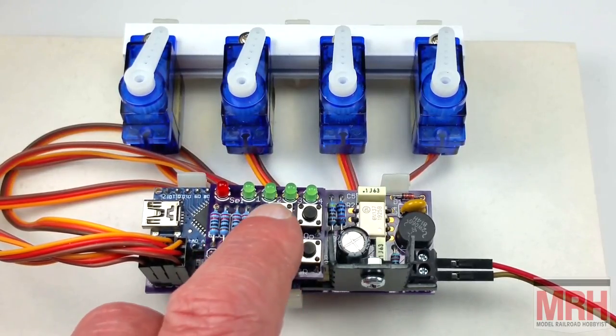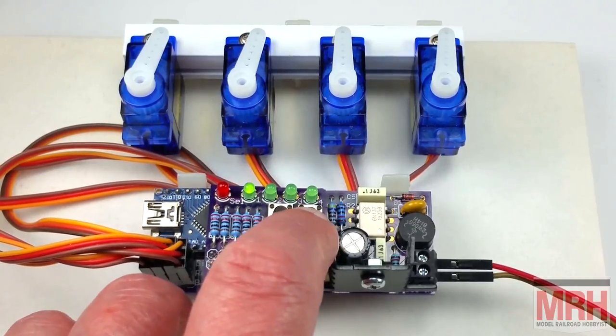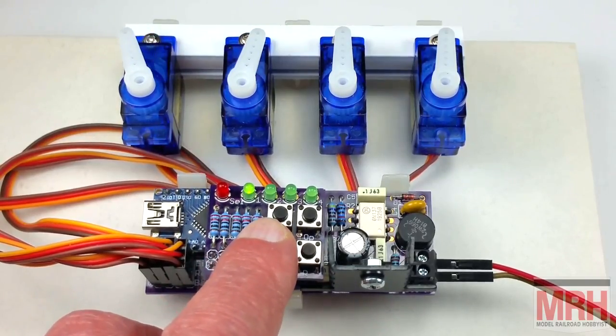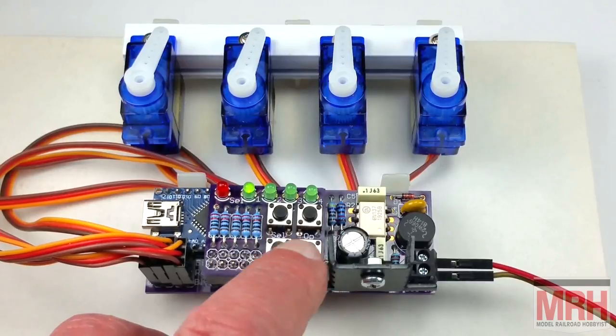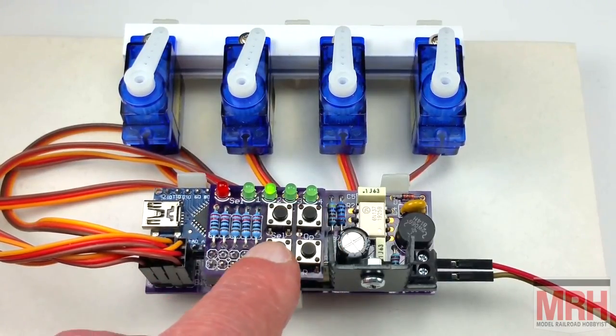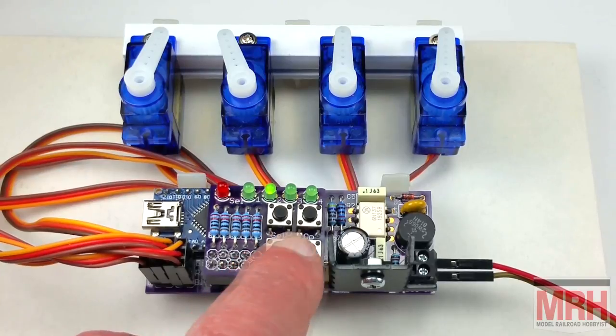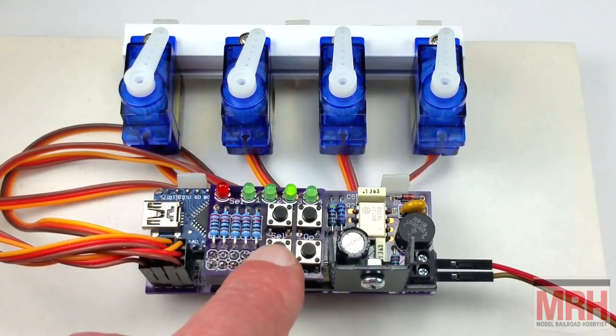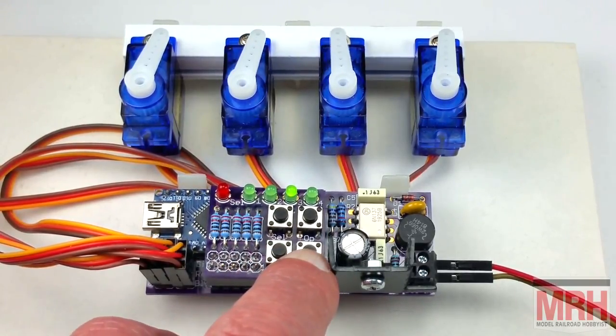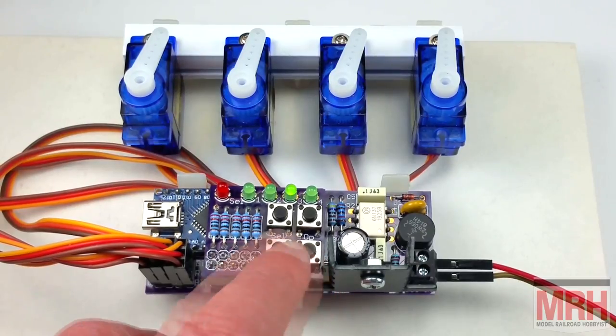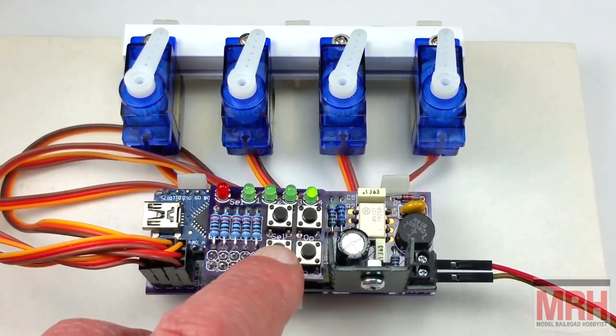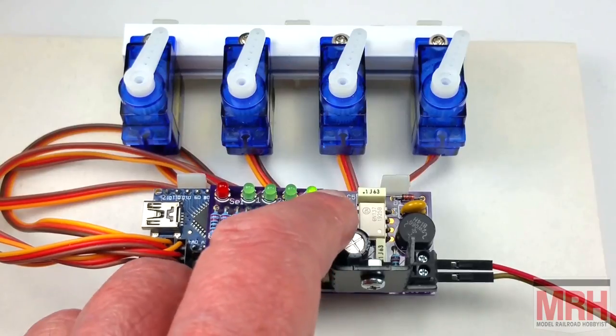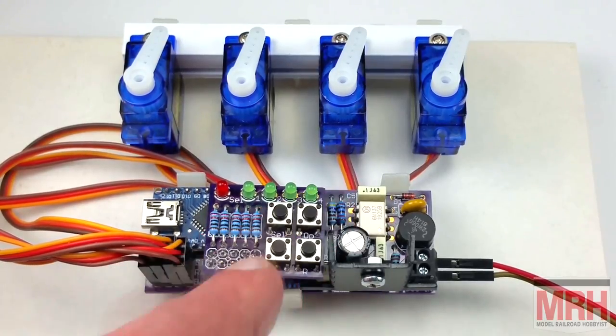Now you can check that the servos have been set up in the right position by pressing operate and pressing left to move left, right to move right. Operate. Check servo 2. Left and right. Operate again. Check servo 3. There it goes. Operate again. Check the position of servo 4. Left and right. And then operate again to stop.